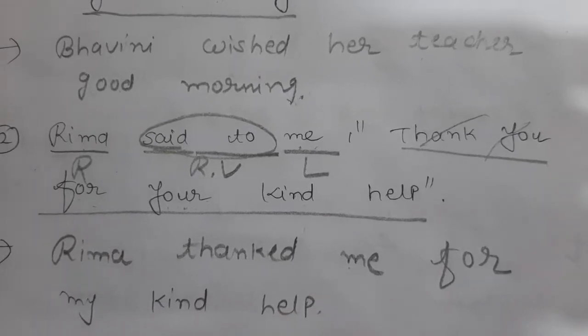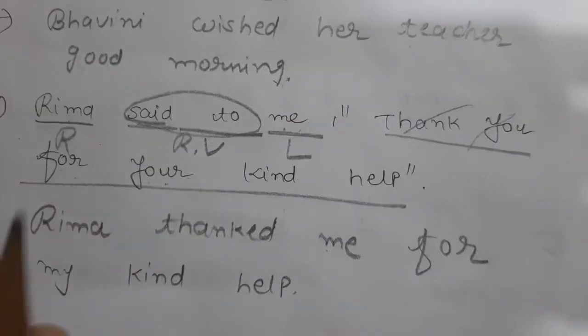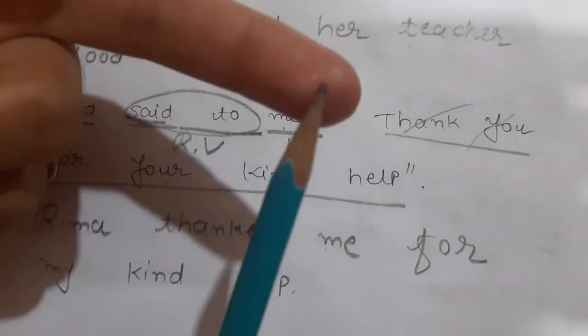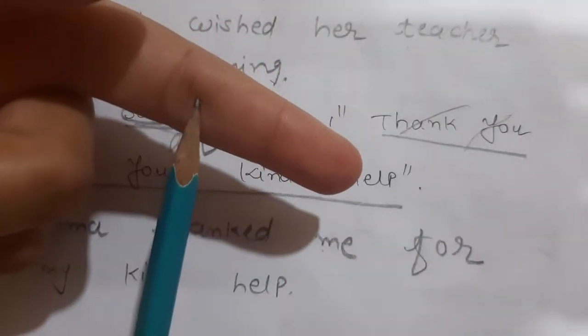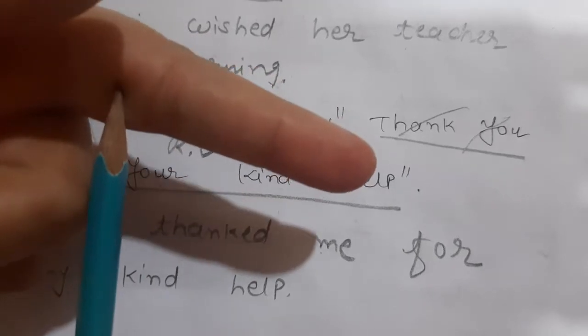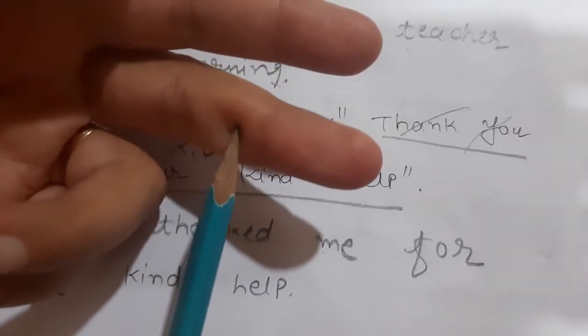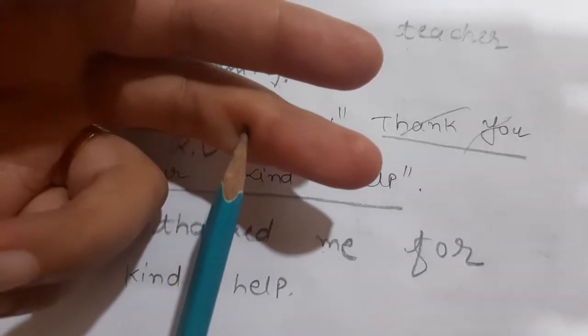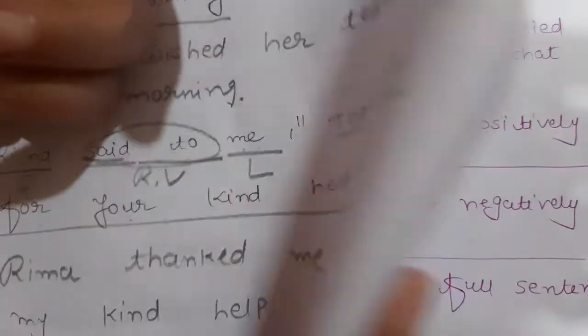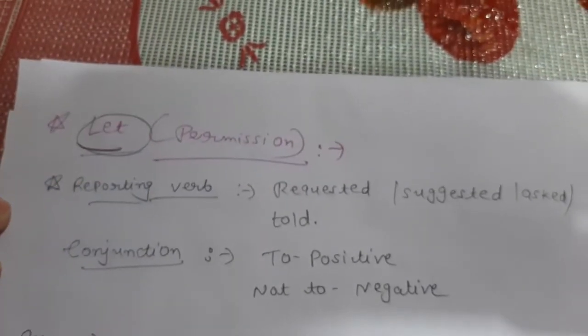Here all five types of sentences end. I have talked about simple, interrogative, exclamatory, imperative, and optative. But one more thing I am going to talk about — that is 'let' type of sentences.